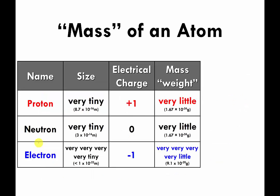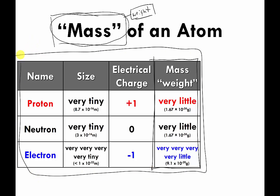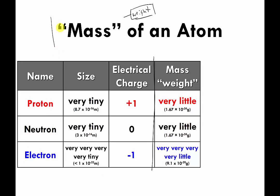At this point, I want to talk about the mass of an atom. I put 'mass' in quotes for a couple of reasons. One, I've told you that usually I'm going to refer to mass as weight, and mass and weight are not exactly the same thing, but they're close enough. I previously showed you a table where I said protons weigh very little, neutrons weigh very little, and electrons weigh very, very much less. I want to talk more specifically about how much the different particles in an atom actually weigh, or what their masses are.